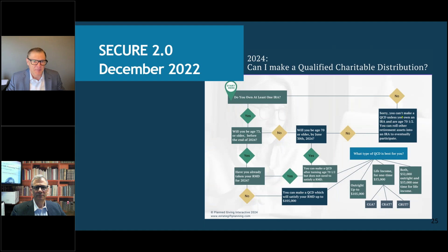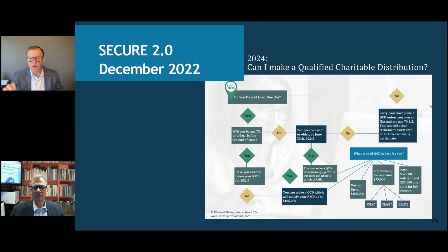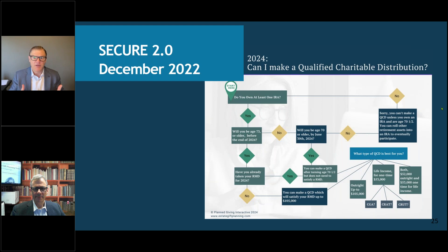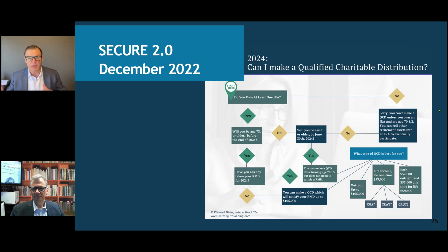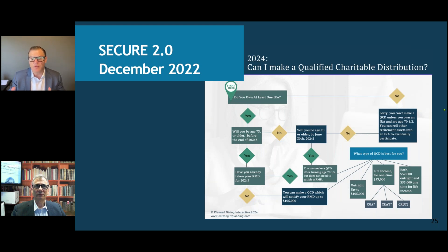This is a fact sheet I'm happy to send to anybody — you could put your own organization's logo in the top left-hand corner. I find that this flow chart is important for clients because before the SECURE Act, the QCD and the minimum distribution age were the same — age 70½. It was easy. Now it jumped after SECURE to age 72, then SECURE 2.0 to age 73, and then it'll be 75 in 2033. So it's really confusing for donors to link the QCD and the RMD together — that's really all this flow chart does. In the bottom right-hand corner, if you do qualify for a QCD, it helps you figure out which type of QCD is best for you.